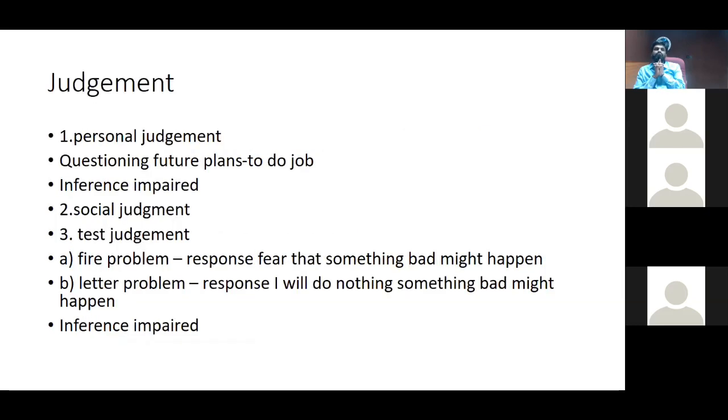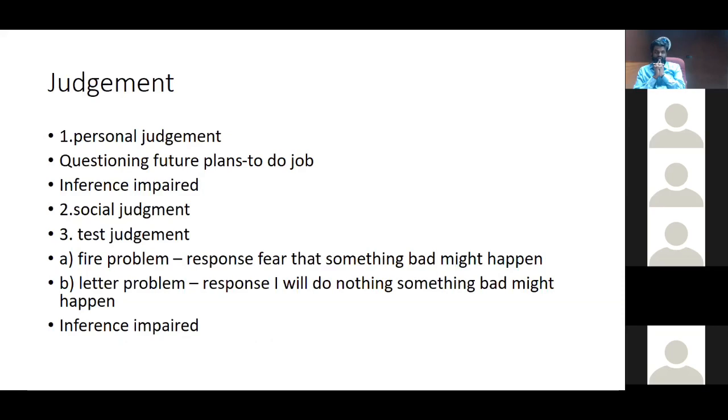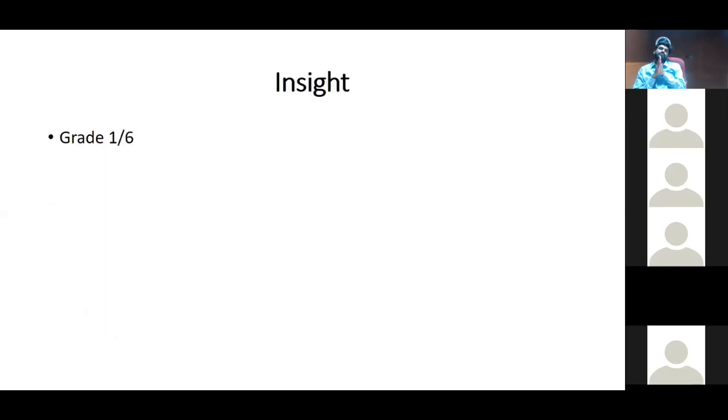On testing his personal judgment, his answer was on questioning about his future plans, his answer was to do job. So my inference is impaired personal judgment. On eliciting his test judgment, on giving him the problem of a fire and a letter problem, his response was he fears that something bad might happen. And his social judgment, his behavior was found to be disrespectful in a situation where he is supposed to be calm. So the inference, he is having impaired personal, test, and social judgment. On eliciting his insight, he had grade 1 of insight on a grade of 1 to 6.